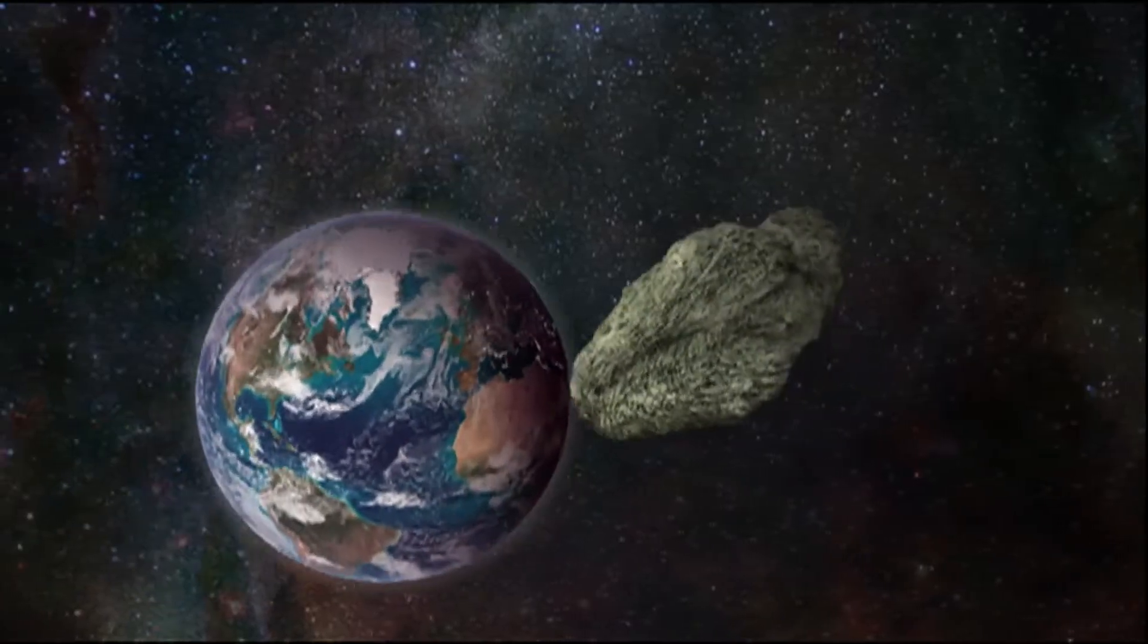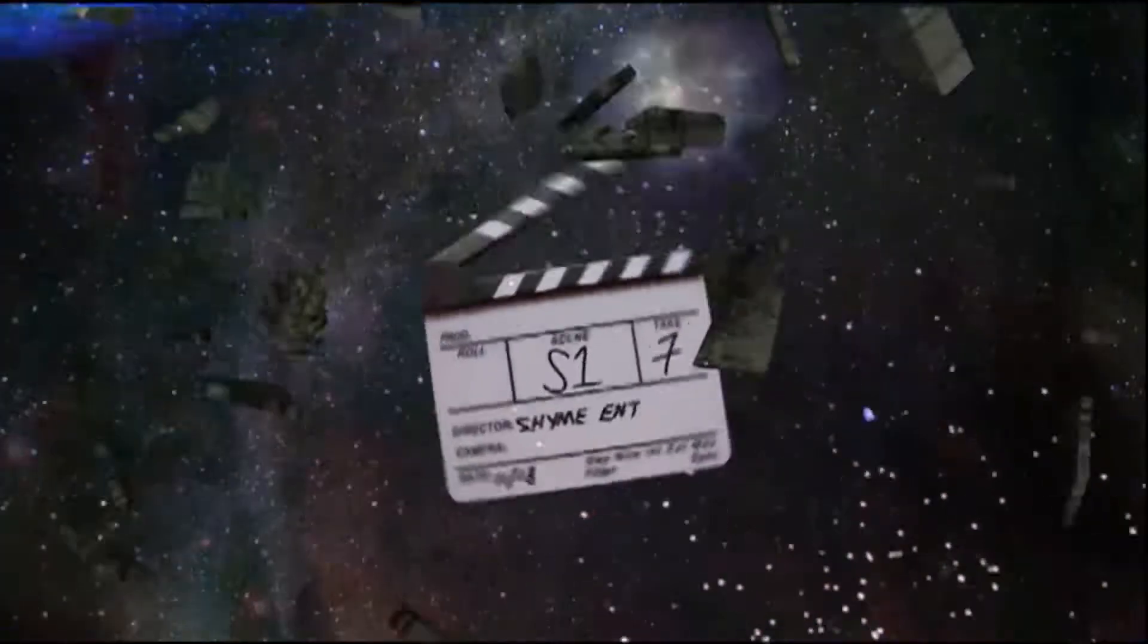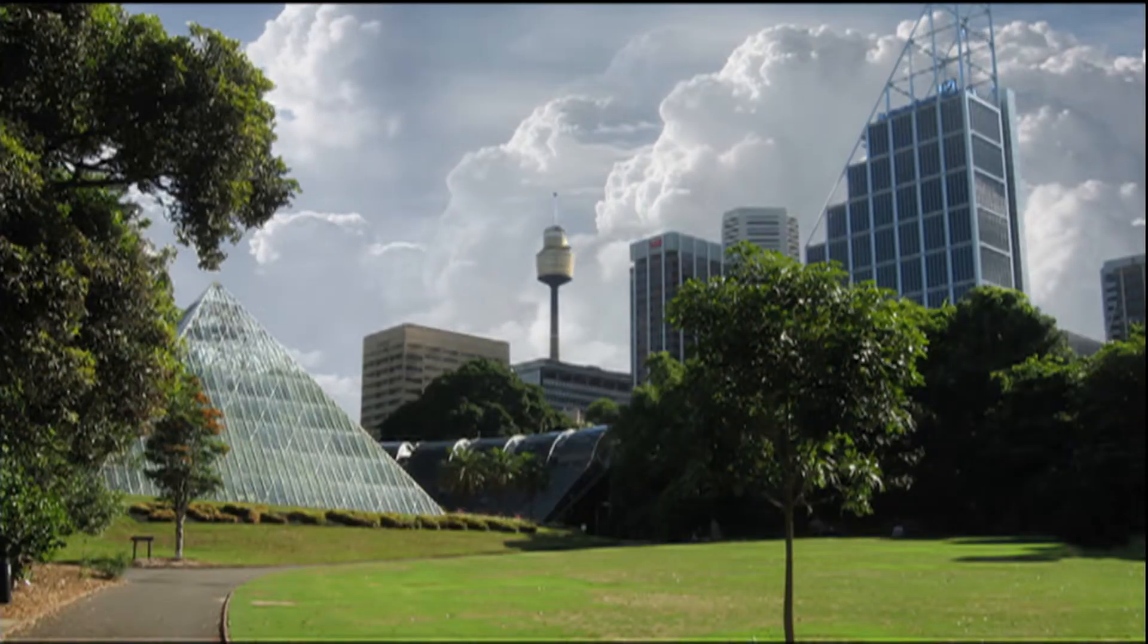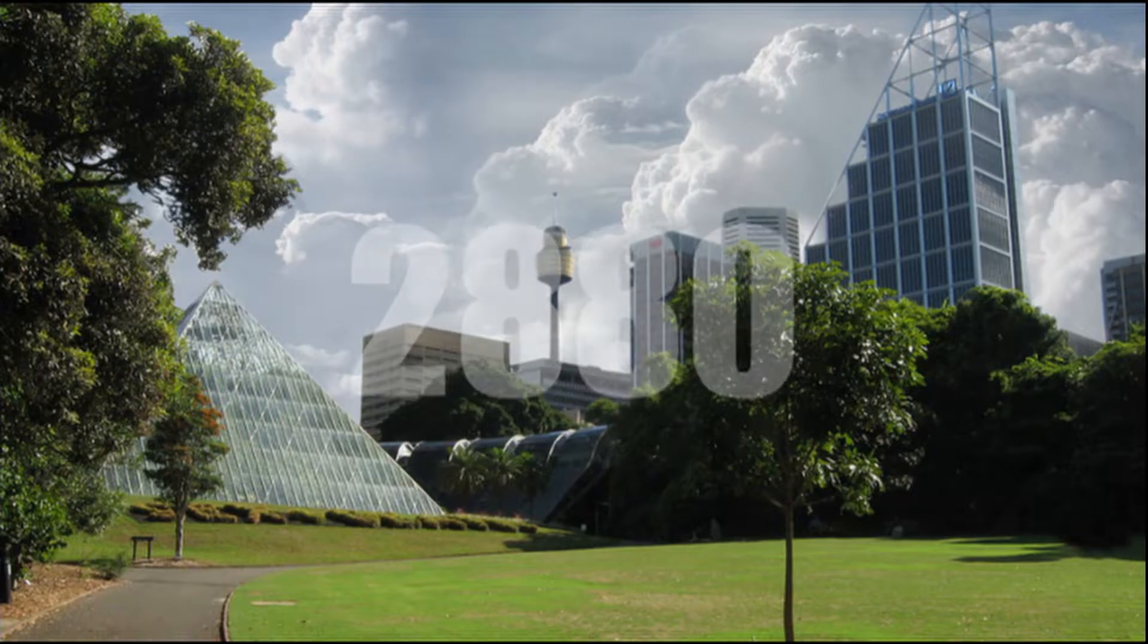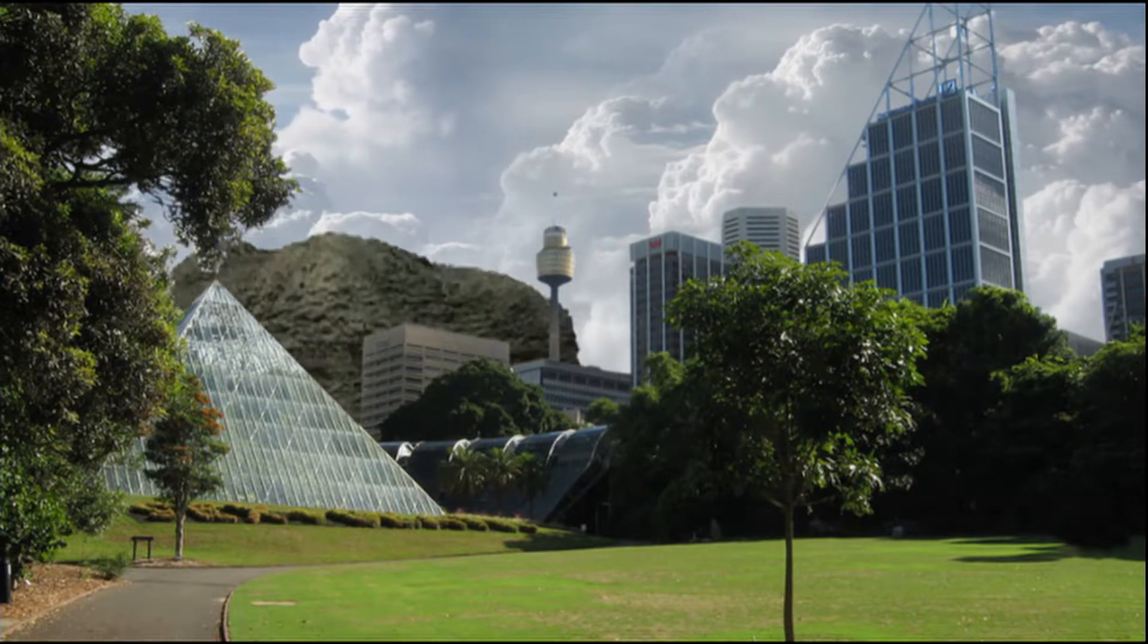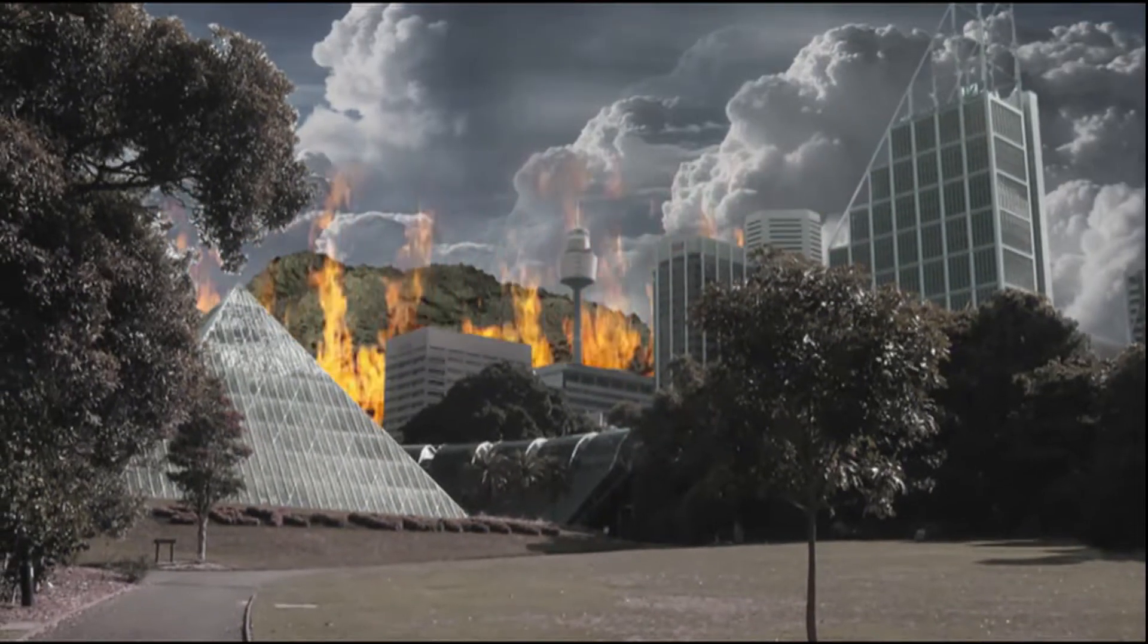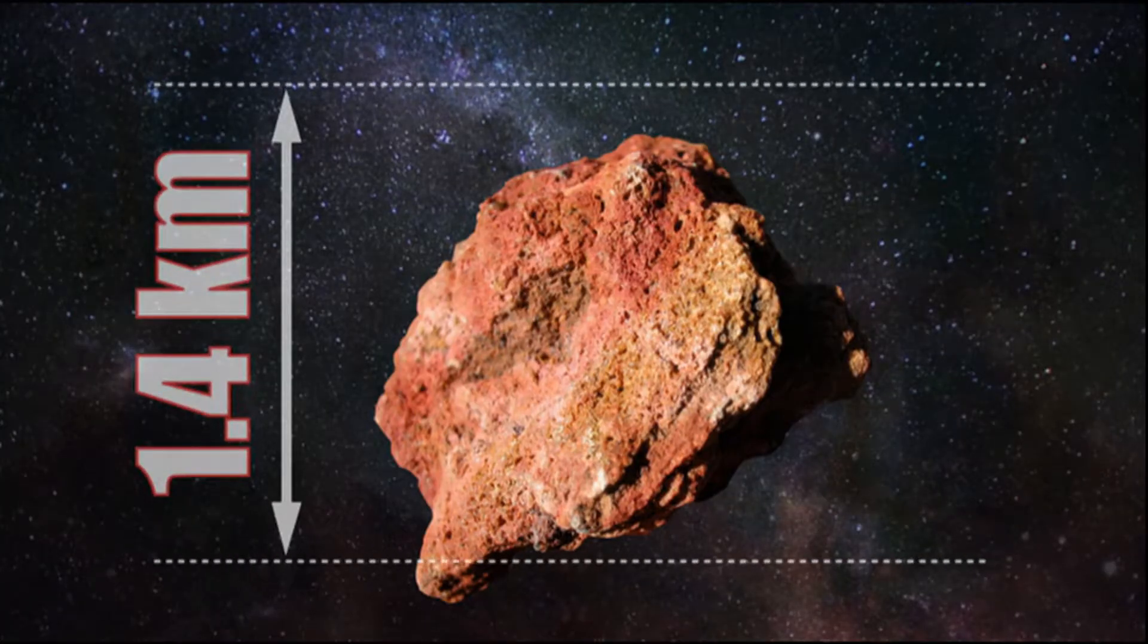A catastrophic celestial body colliding with Earth isn't just the stuff of Hollywood films. NASA predicts that on March 16, 2880, an asteroid called 1950 DA will get very close to us, with the potential to destroy all life on Earth. The asteroid is about 1.4 kilometers tall.